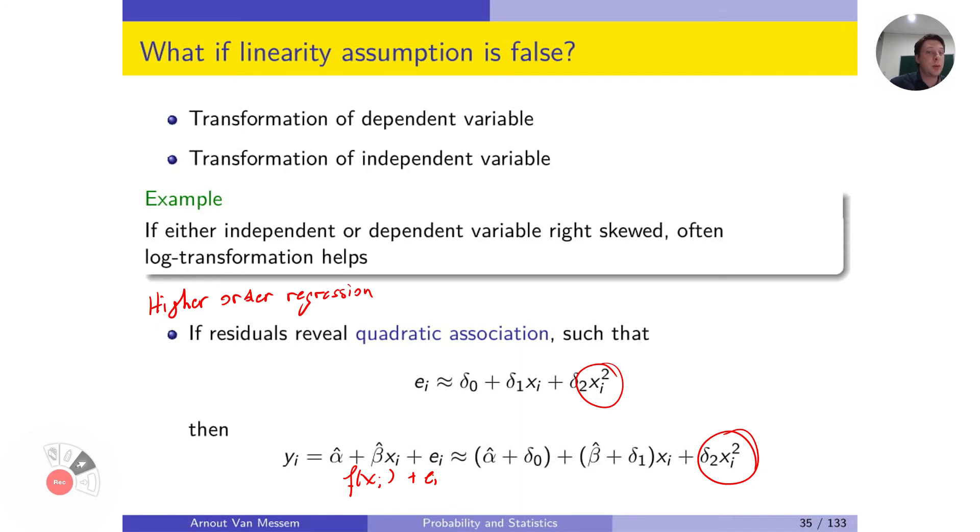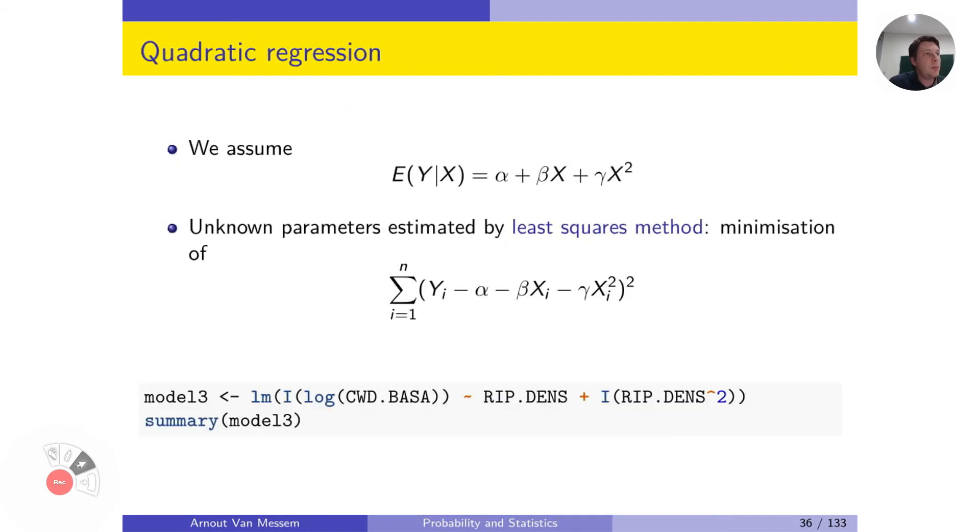Hence, it doesn't make sense to perform a linear regression, but it would be more appropriate to perform a quadratic regression. So in that case, we assume that the expected value of y given x is not just alpha plus beta x, but we add a quadratic term gamma x squared.